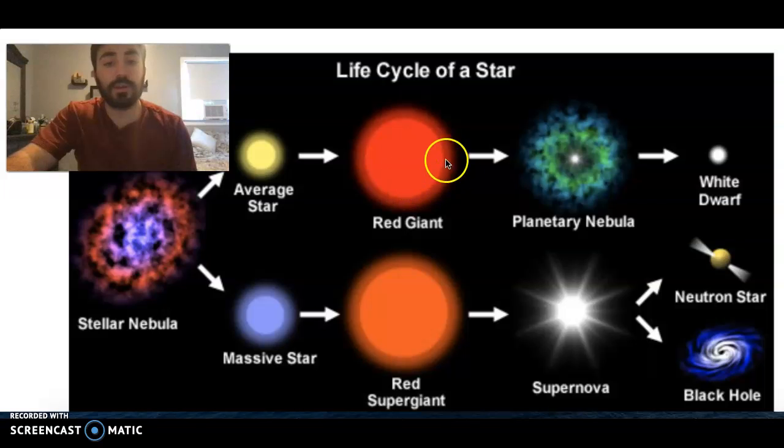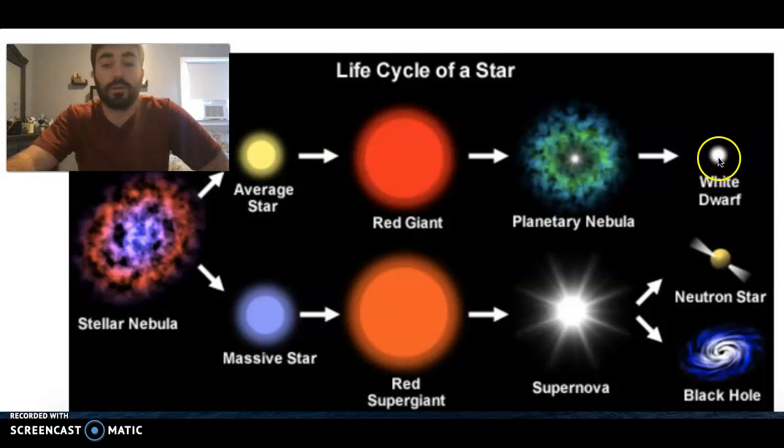So as that fuel is running out in the red giant, it continues to expand and expand until the force of gravity is weak enough that the outer layer actually goes out into space. So this is called a planetary nebula. So all of that outer layer of the red giant has escaped into space, leaving behind just a little dense core. And that core is called a white dwarf. It is the dead remnant core of the red giant. It is very dense, and fusion is no longer going on. So there's no more fuel, so no more fusion.